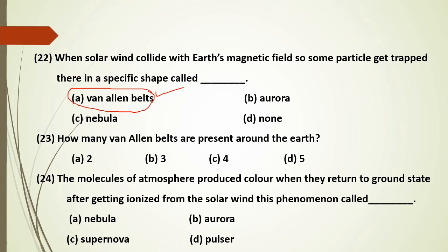The Van Allen Belts are present around the Earth. The molecules of the atmosphere emit light when they return to the ground state after being excited by the Van Allen Belt particles — this phenomenon is called Aurora.